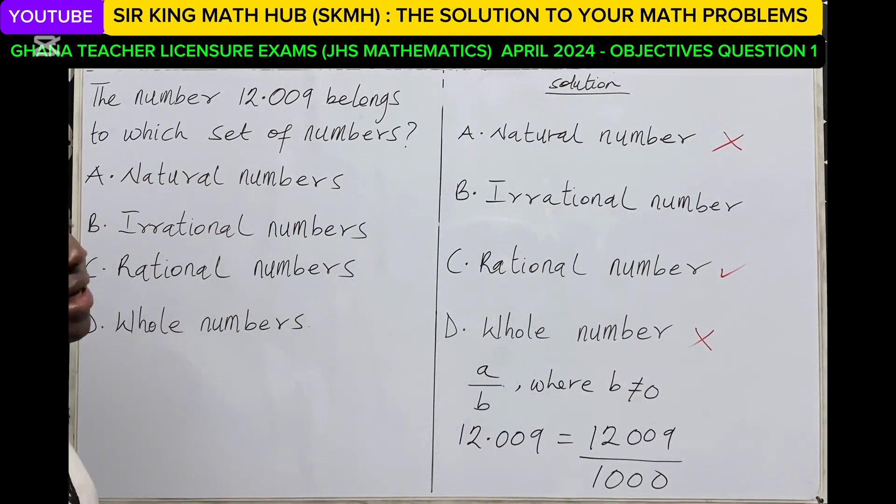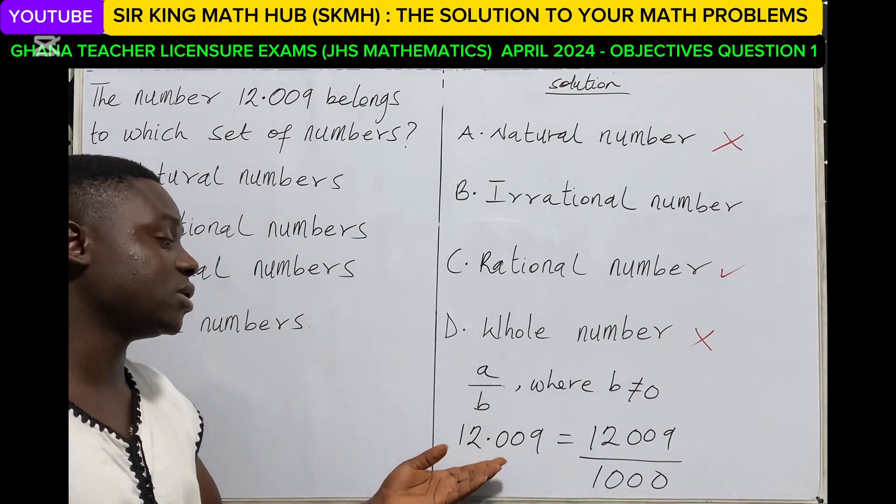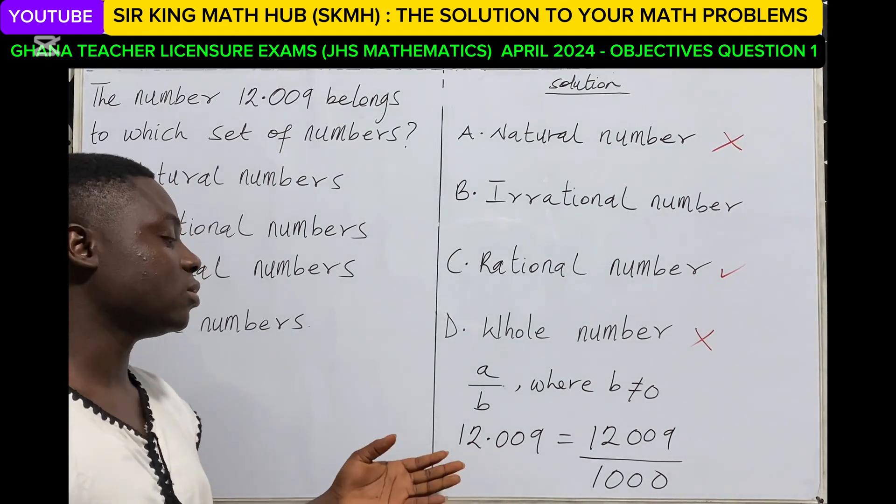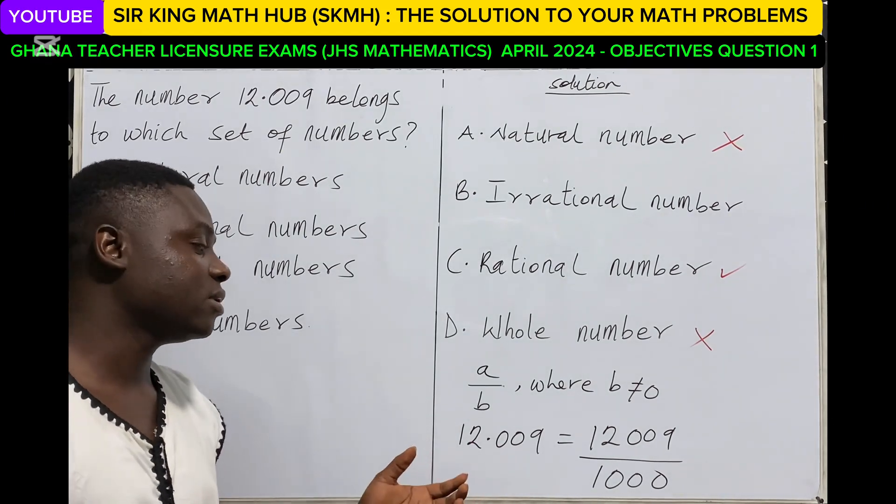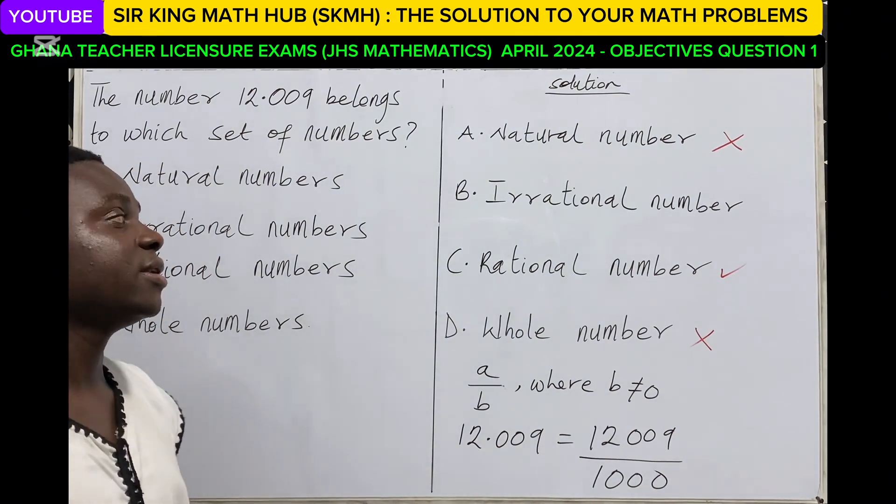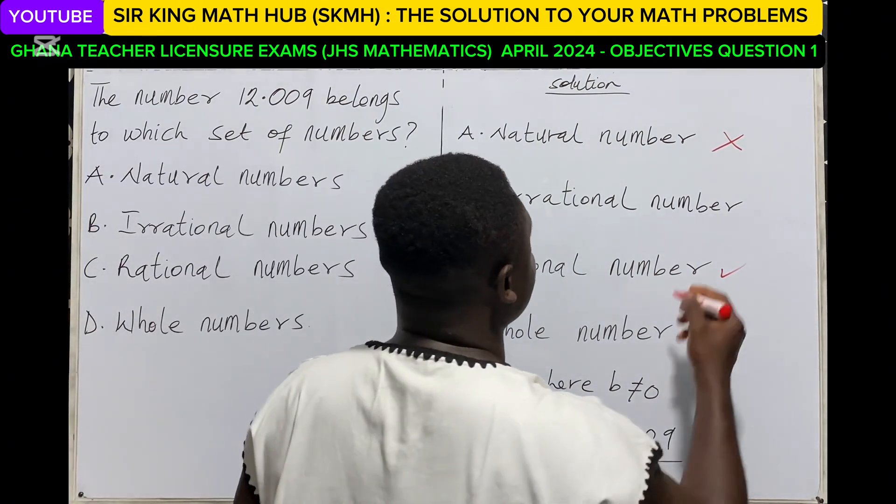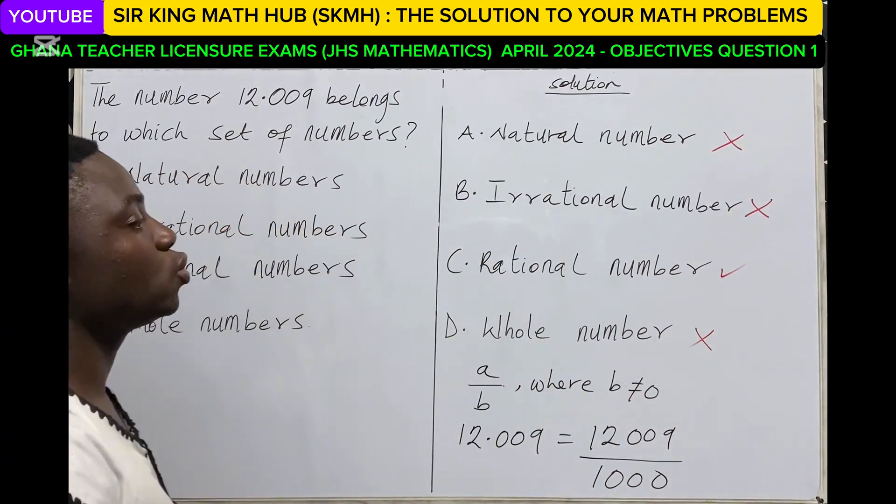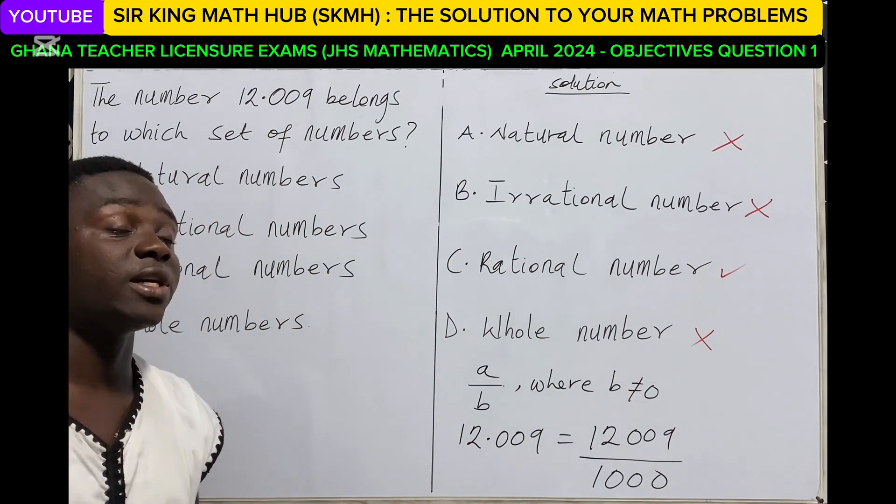But what then is an irrational number? So irrational number is the opposite of a rational number. So if a given number cannot be written as a common fraction, then it's an irrational number. So this does not also hold for 12.009.